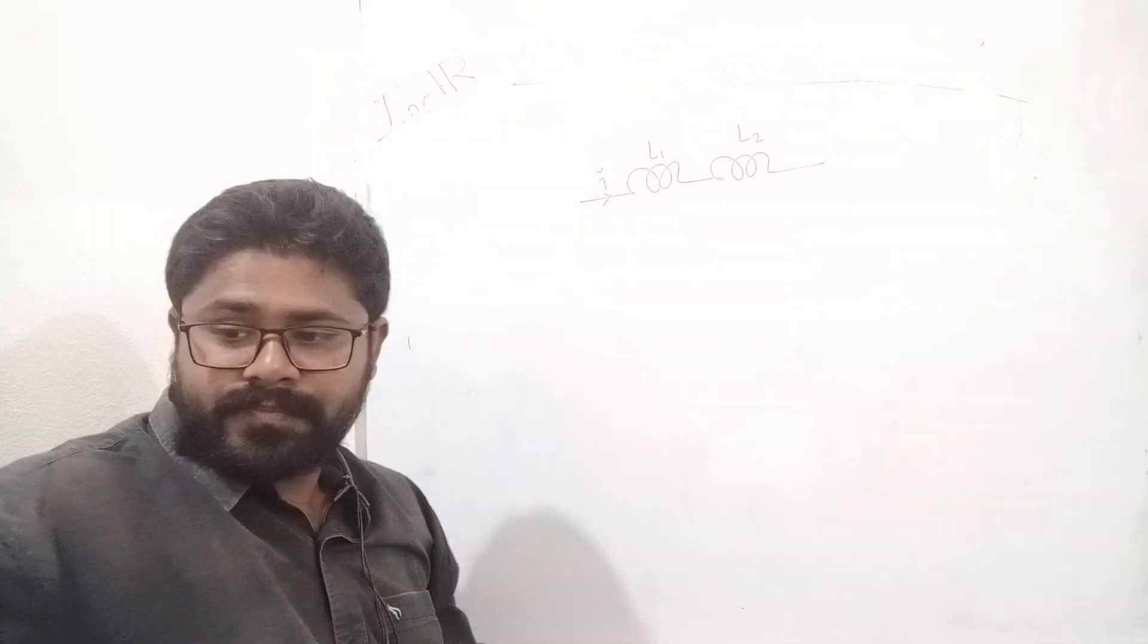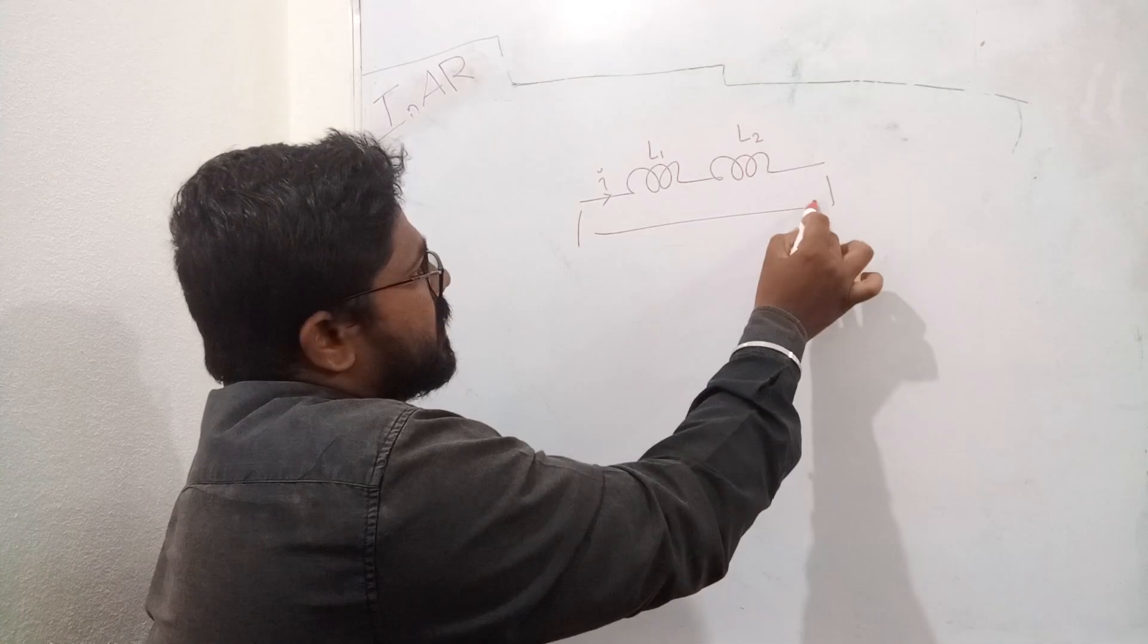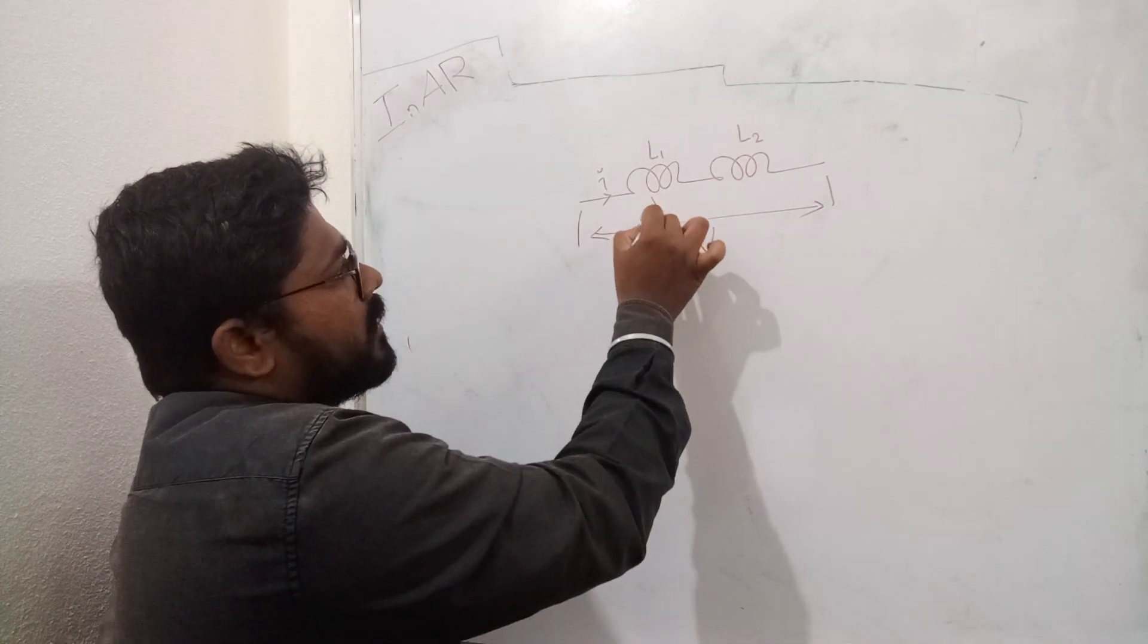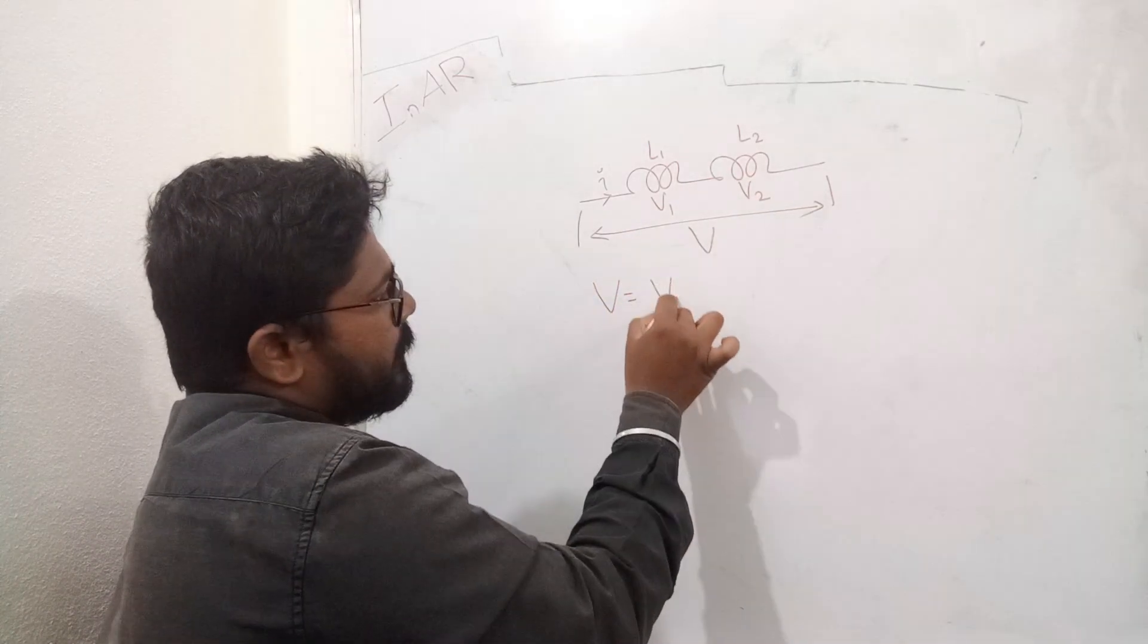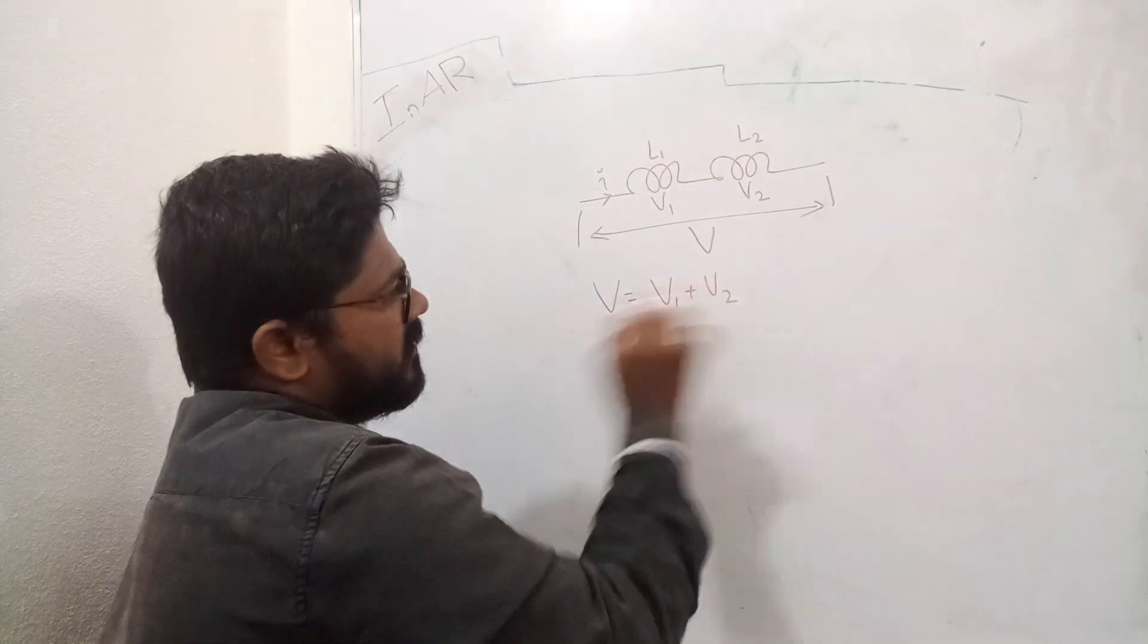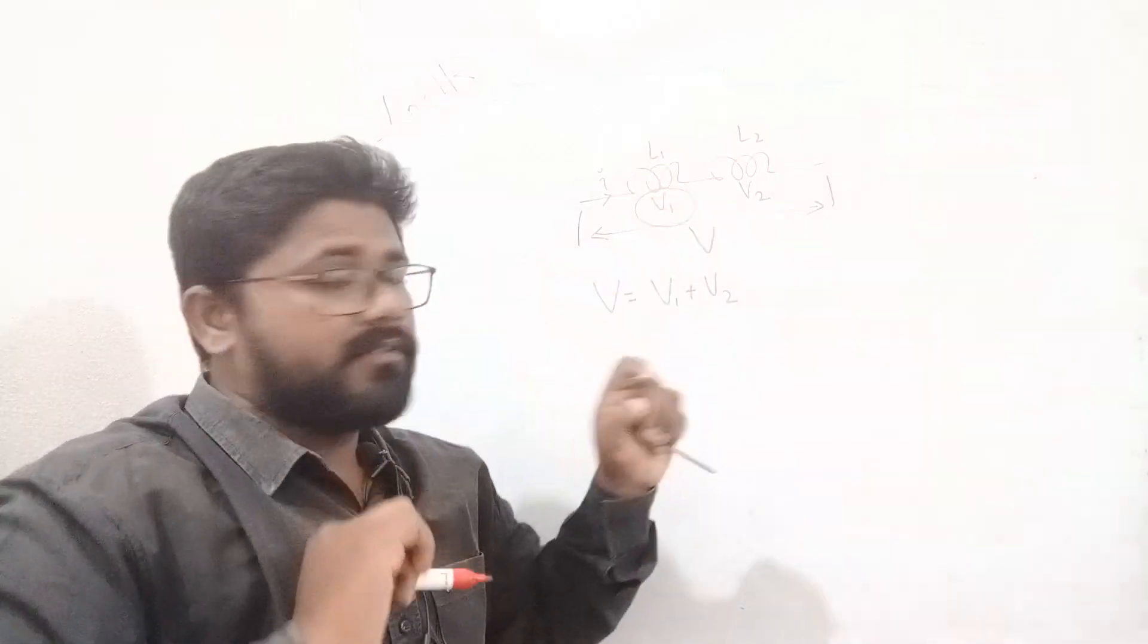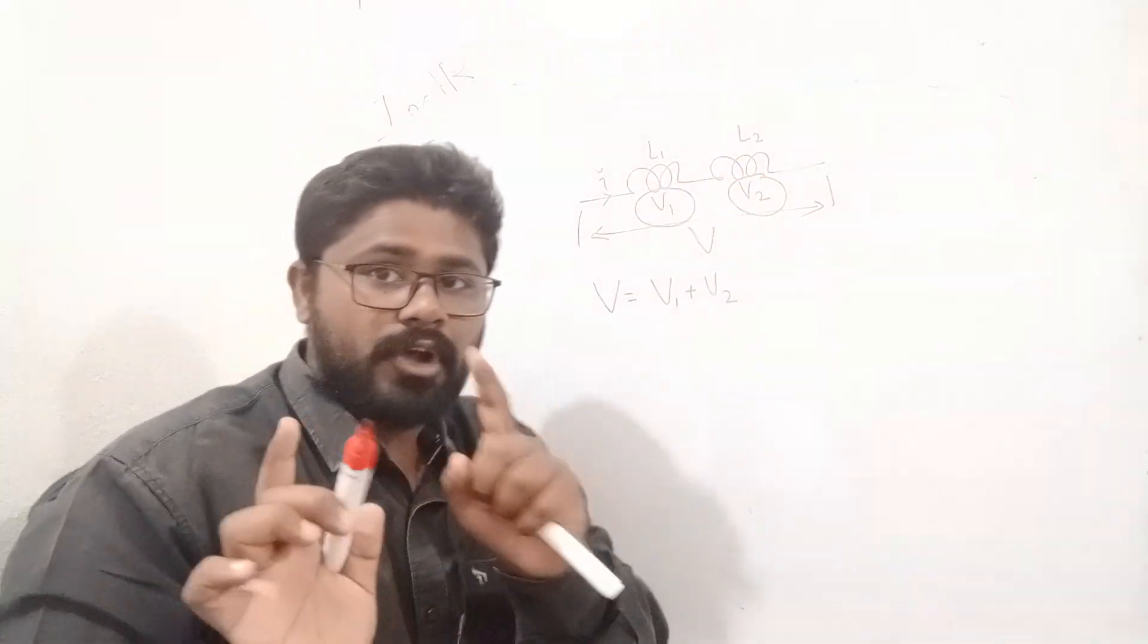So, let us see that derivation now. This V will be equal to V1 and V2. That is, V equals V1 plus V2. We could have V1 drop across L1. We could have V2 drop across L2. Now, try to observe this.